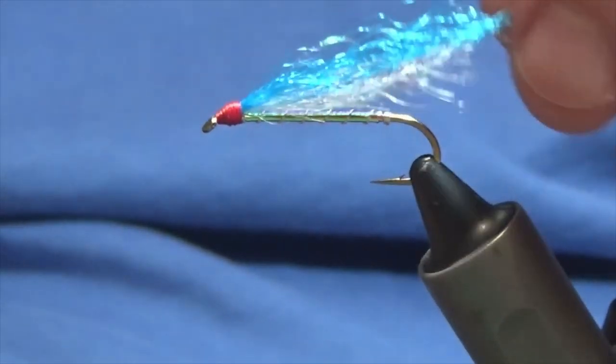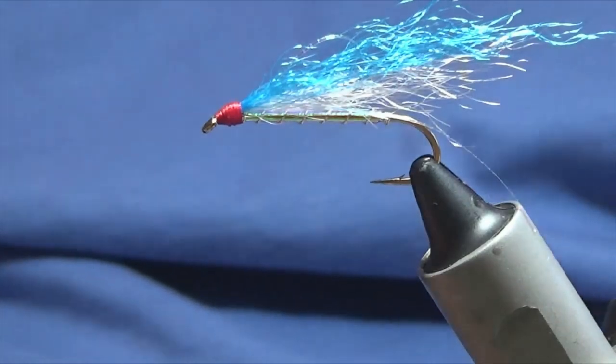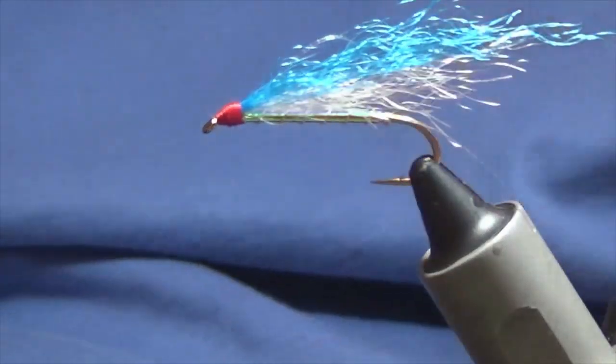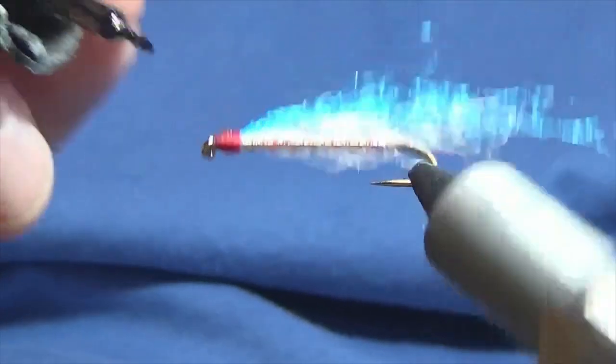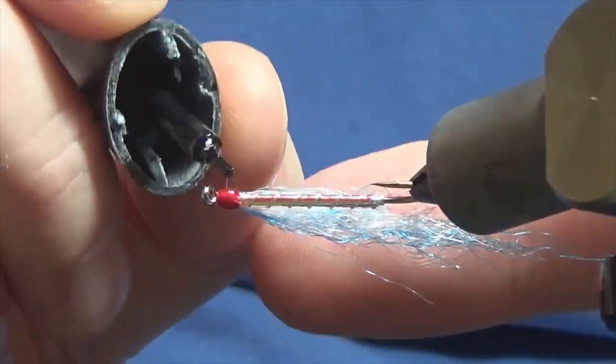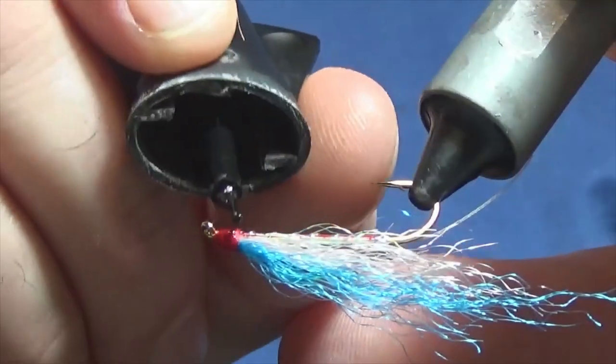Just get the wing up for you just so you can see the wee fly. Now just to finish off, just a wee drop of superglue on to the head, right the whole way around.